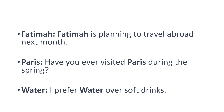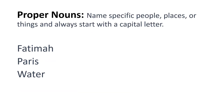Now let's look at three more examples. 'Fatima is planning to travel abroad next month.' 'Have you ever visited Paris during the spring?' 'I prefer water over other soft drinks.' Fatima, Paris and water are the nouns here. Fatima is a name of a girl. Paris is a name of a city — if we say Paris, we know which city we are talking about. Water is also a name of a specific drink. So if you name specific people, places or things, these are called proper nouns.